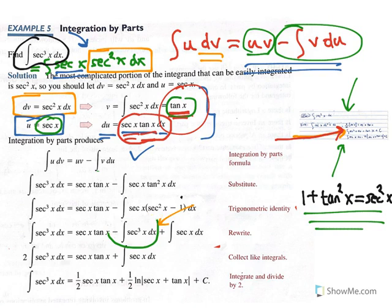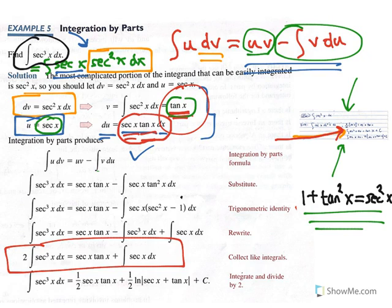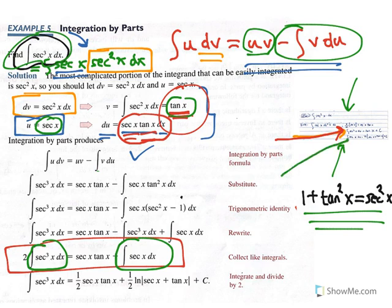Our objective is to find the original integral, which now appears on the left side. We solve for it by multiplying both sides by one half. On the right side we have one half times the quantity: secant x times tangent x plus the indefinite integral of secant x dx. From calculus AB, the indefinite integral of secant x dx is the natural log of the absolute value of secant x plus tangent x. Multiplying by one half and adding the constant of integration C gives our final answer.